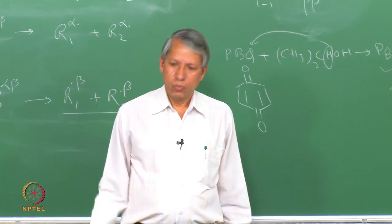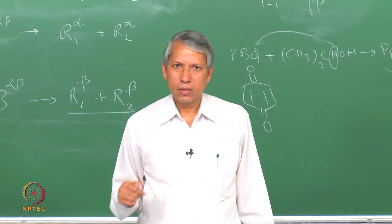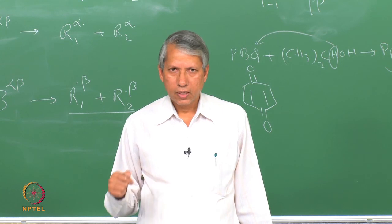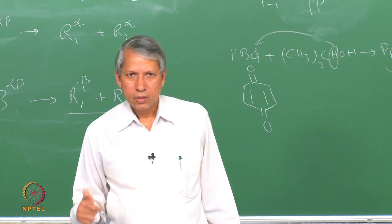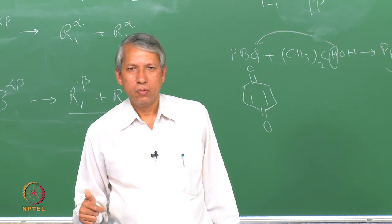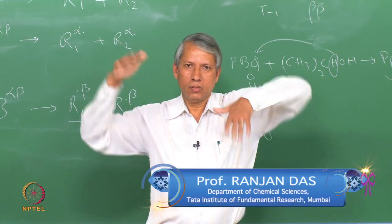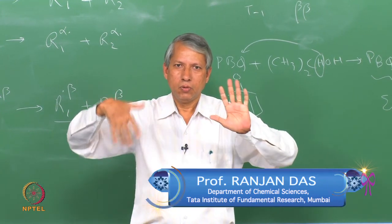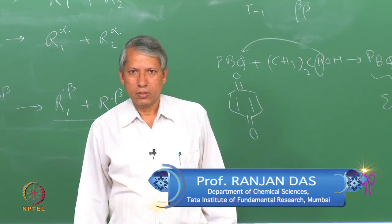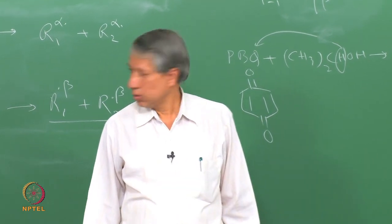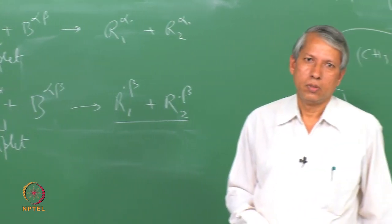With this we will stop, and in the next class we will take up the other spin polarization mechanism where one sees the AE or EA signal — the nucleus-spin-dependent electron spin polarization — as was seen in the acetone/isopropanol system.